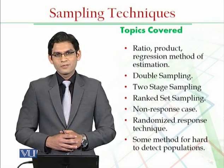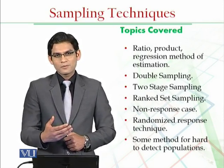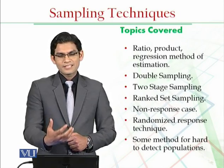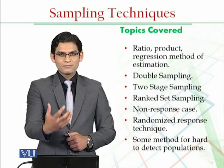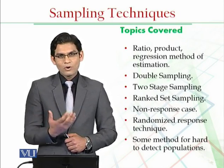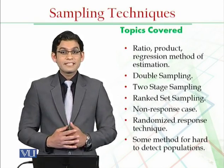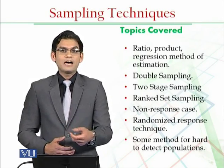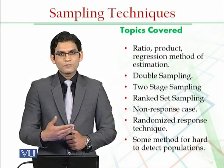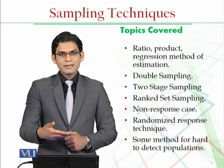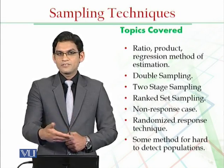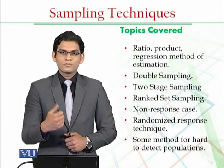We discussed ranked set sampling. In ranked set sampling, we discussed how to take samples in the form of sets, then how to arrange them, order them, rank them, and then how to select the elements after the ranking of the sets. In this design, we learned how to estimate the population mean using ranked set sampling, and how to conduct ranked set sampling using R software.